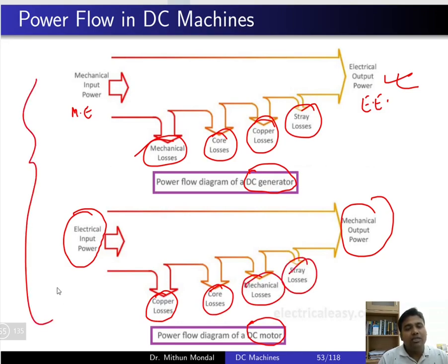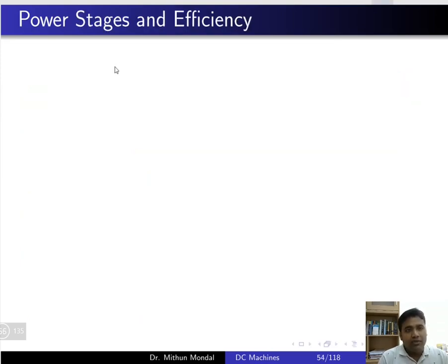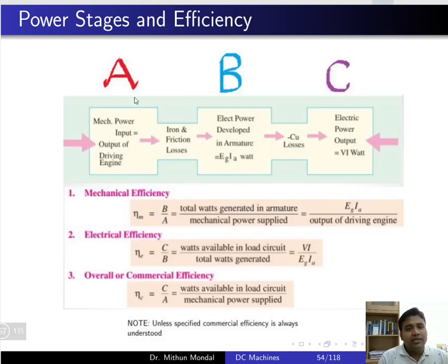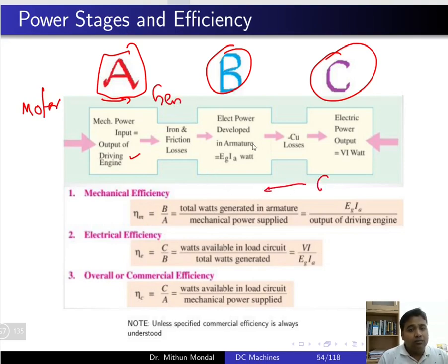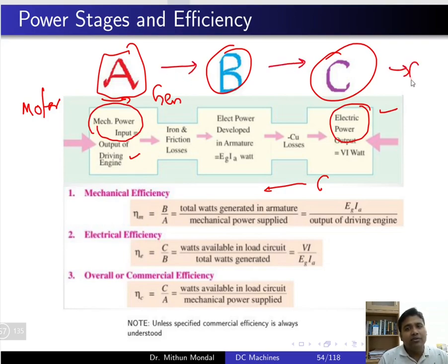Having known this power flow diagram, it is easy to calculate efficiency. Consider three stages A, B, and C. The mechanical power input is the output of the driving engine. Going from A to B to C represents generator action — from mechanical power input to electrical power output. Going from C to B to A represents motor action — electrical power input to mechanical power output.